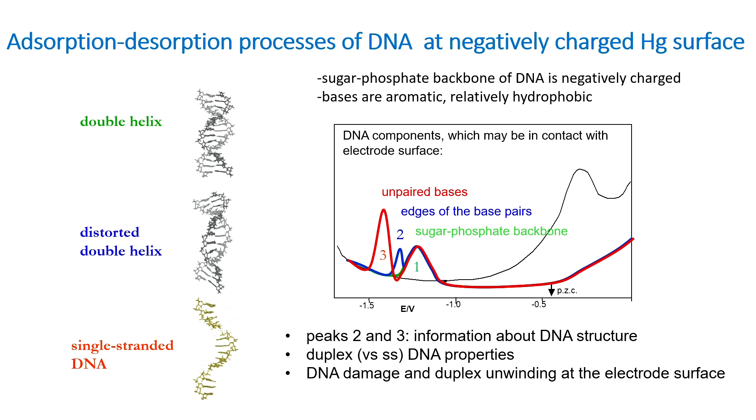You can see some effects of individual DNA components: unpaired bases, edges of base pairs, and the sugar-phosphate backbone. This gives information about the DNA structure, and here we are talking about the properties of duplex DNA versus single-stranded DNA. Using these principles, we proposed a couple of techniques for detection of DNA damage, based on differences in accessibility of bases and the susceptibility of duplex DNA to unwinding at the electrode surface.